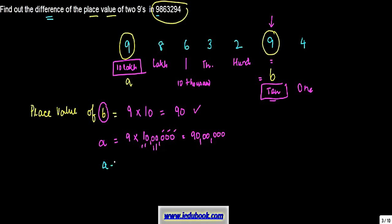Or we need to find out a minus b. a we know is 90,00,000, b we know is how much? 90. So we just do the subtraction, right? So you have 90,00,000 minus 90.